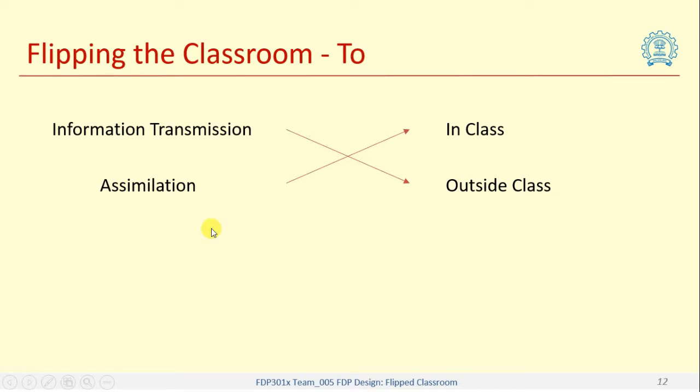The reason for doing this, moving the information transmission to outside the class, is that with the help of technology it is easy to capture this information transmission and we can let students work on the lower cognitive levels such as what is a definition of something, explain how something else can work, explain the process of some other system, etc.